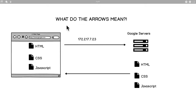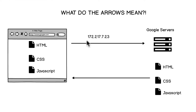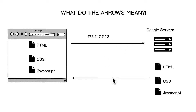Some of you may have had a question: what do the arrows mean? It's kind of like magic, right? I just told you that we send off the IP address to the servers and the server responds with some files — but that's just magic. What do these arrows mean? So we're going to talk about that in this lesson.